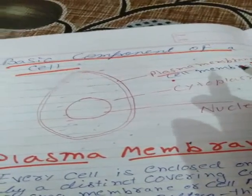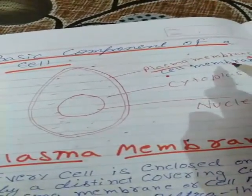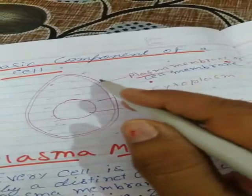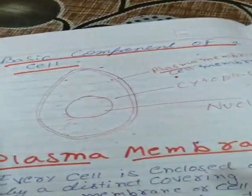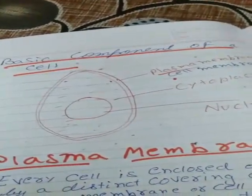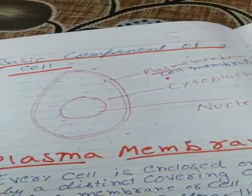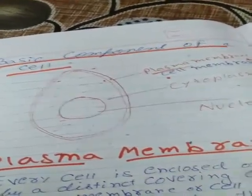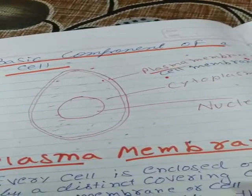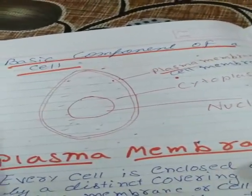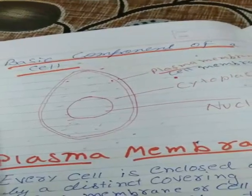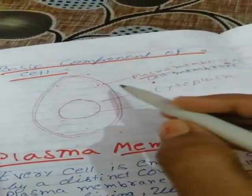It is called the semi-permeable membrane because there are pores present on this membrane and it allows the entry and exit of materials. However, this cell membrane allows the entry and exit of only selected materials, so it is also called the selective permeable membrane.